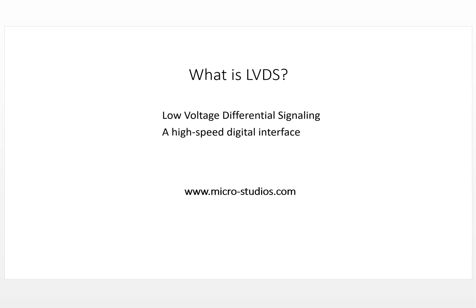LVDS is a communication protocol — it stands for Low-Voltage Differential Signaling, and it is a high-speed digital interface. So we get four key properties: low voltage, differential signal, high speed, and it is a digital interface — not analog.